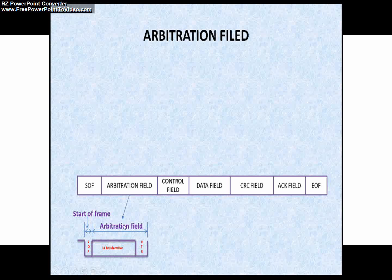The Arbitration field consists of 11-bit identifier and RTR bit. The 11-bit identifier and RTR bit is shown in this diagram. As we already discussed about identifier in properties of CAN protocol, identifier does not indicate the destination of the message.